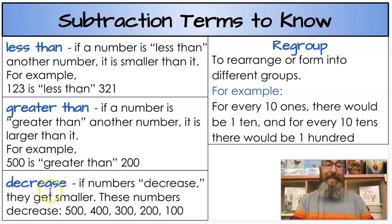Next we have the word decrease. If numbers decrease they get smaller. These numbers decrease: 500, 400, 300, 200, 100. They decrease as we go. They get smaller.